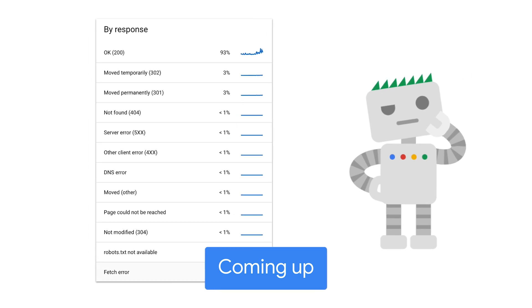Pay attention to the responses your server gave to Googlebot, especially a high number of 500 responses, fetch errors, timeouts, DNS problems, and other things.